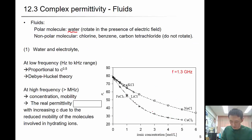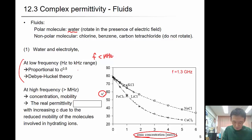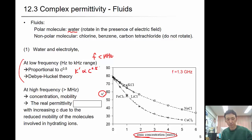With water, as the ionic concentration increases, what happens to kappa prime? At low frequency — when the frequency is less than megahertz, from hertz to kilohertz — as concentration increases, kappa prime is proportional to concentration with a power exponent of 0.5. This can be explained by the Debye-Hückel theory.